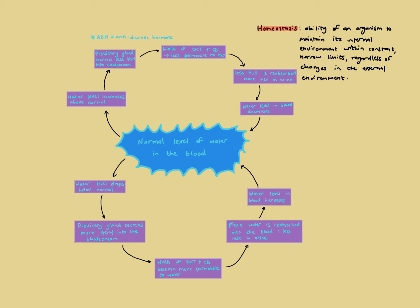Starting with the water level dropping below normal — this can happen because you're not drinking enough, you're sweating a lot, it's a hot day, or you're exercising. The pituitary gland then secretes more ADH into the bloodstream. ADH increases the permeability of the distal convoluted tubule and collecting ducts, so they become more permeable to water. More water is reabsorbed into the blood, less water is lost in urine, and that water re-entering the blood causes the water level to increase back to normal.